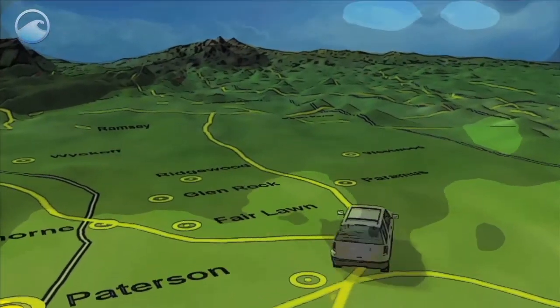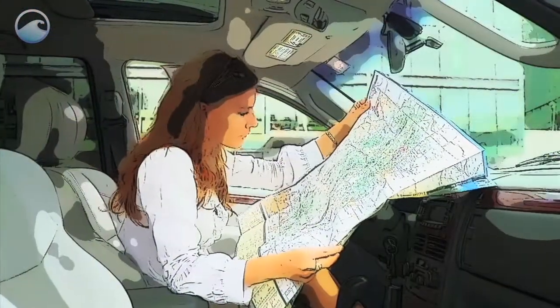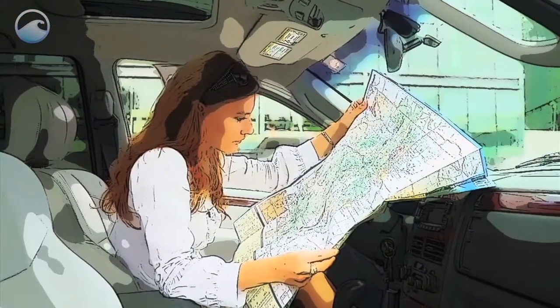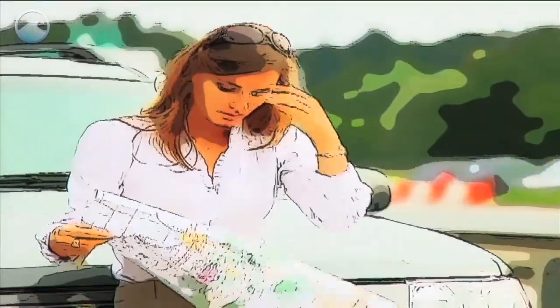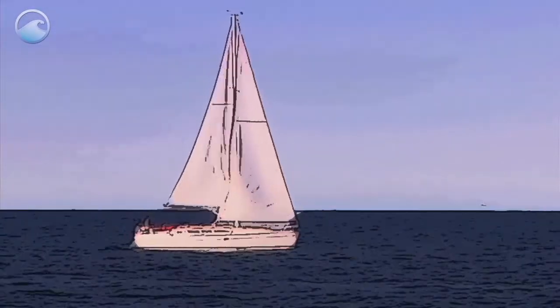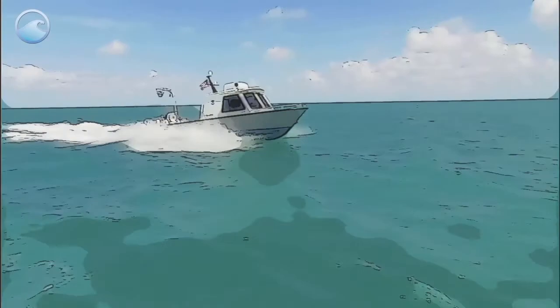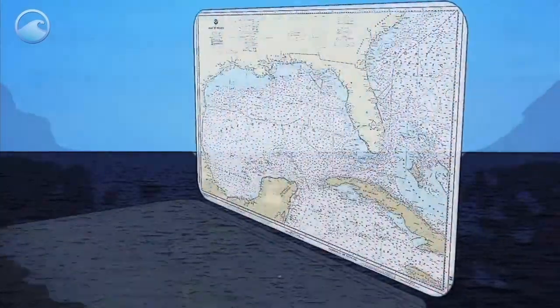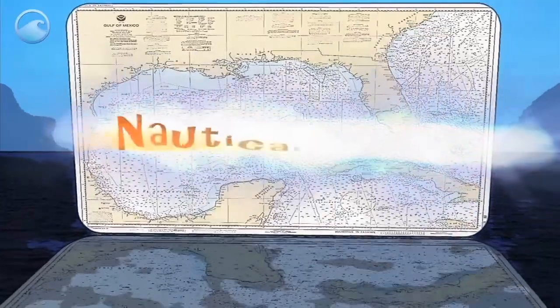Anyone who's taken a road trip has probably had to use a map at some point. Navigating from point A to point B isn't always as easy as it seems. Imagine what it's like then to travel the ocean. How do you know where you are and what's around you? Well, there are maps for the ocean, too. These are called nautical charts.